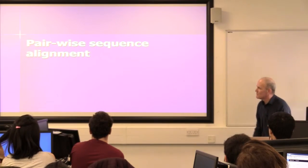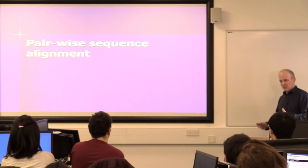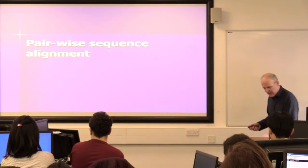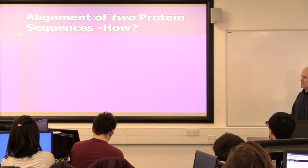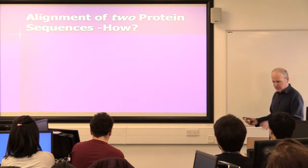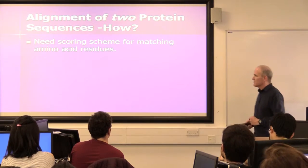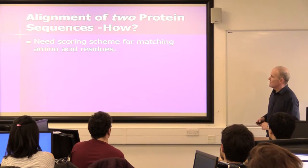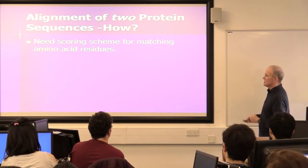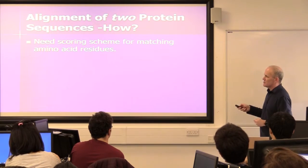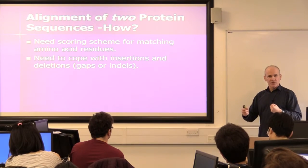So let's go through what protein sequence alignment is and how it's actually done. How do you align two protein sequences? What do the programs use? You've got amino acids — there are 20 of them typically. And you need to say how good it is to align particular pairs of amino acids, so you need some kind of scoring scheme for matching amino acids to each other.